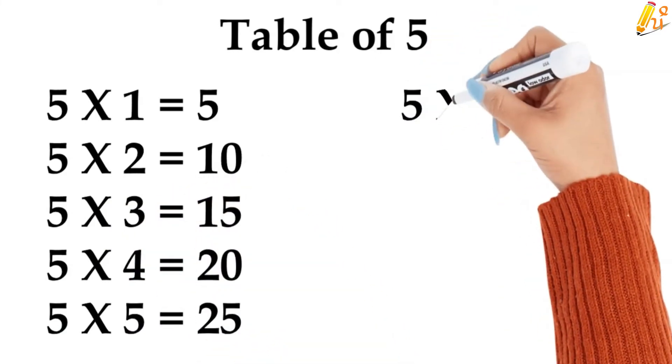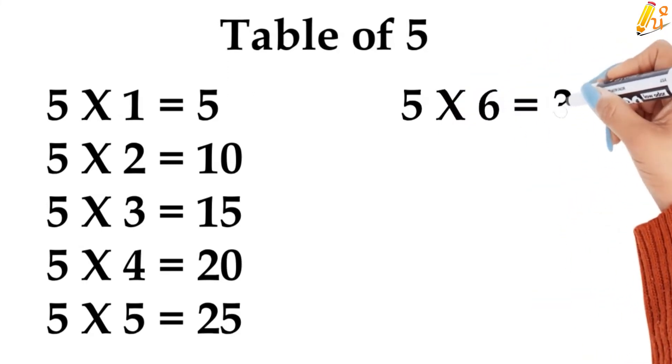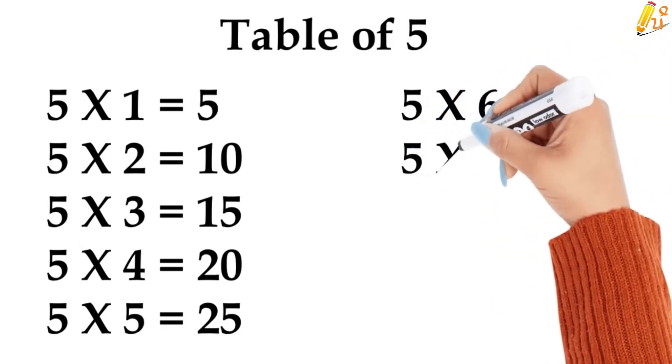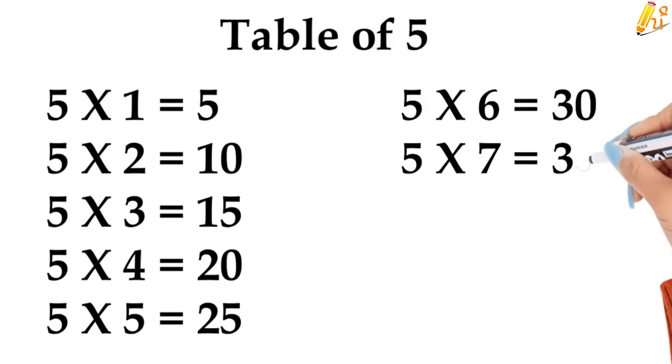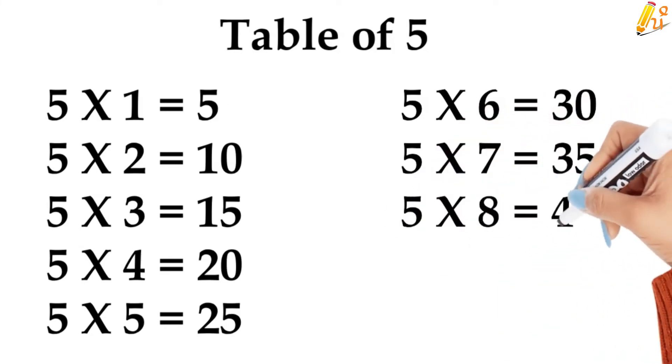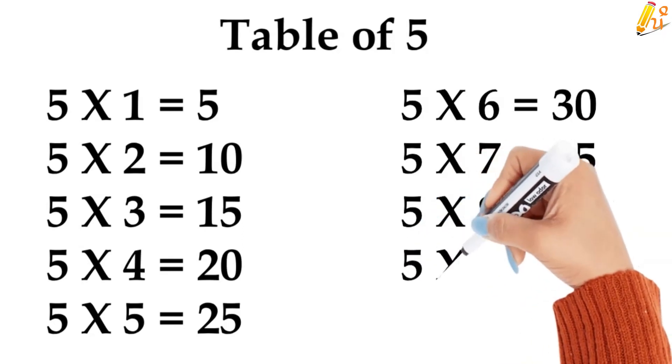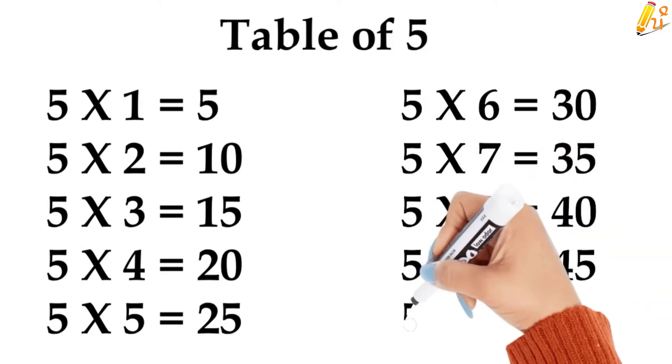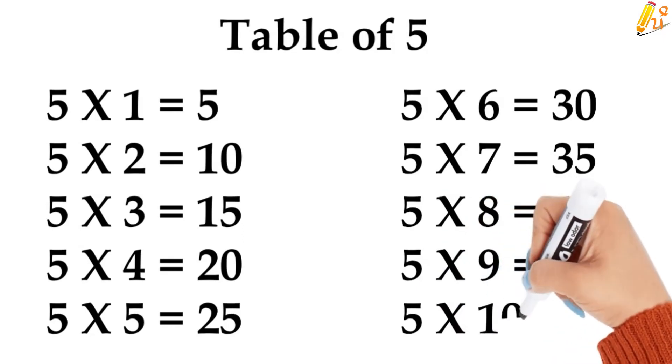5 6s are 30, 5 7s are 35, 5 8s are 40, 5 9s are 45, 5 10s are 50.